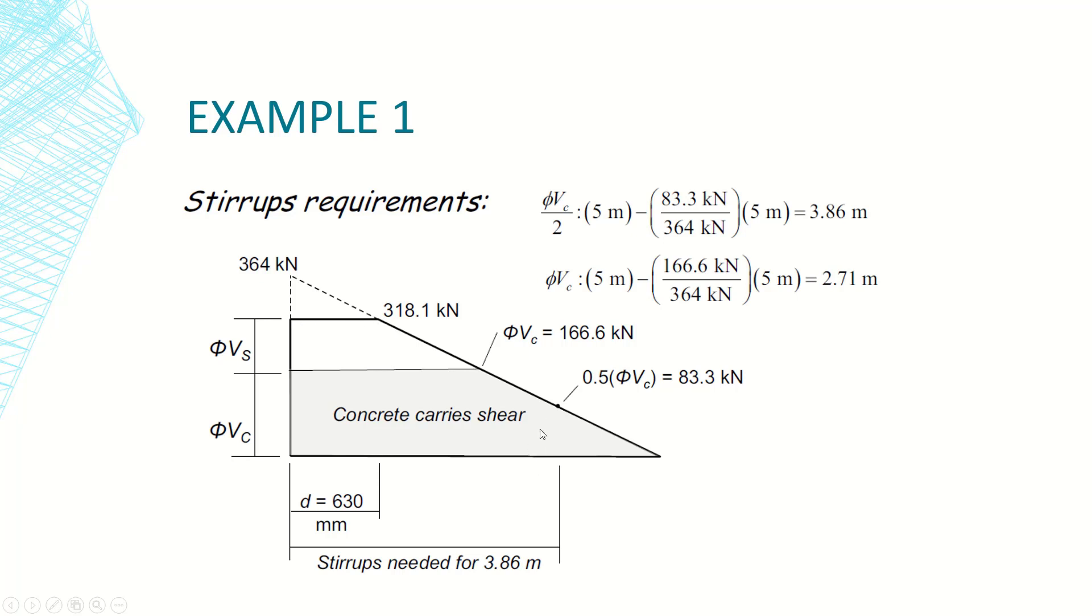We need to determine the position of this limit which is half concrete strength shear and the phi Vc which is for concrete. First of all we take this triangle versus the larger triangle and use the similarity of triangles to determine the station or the distance. So we determined the distance from here to this point as 3.86 and also similarly for the second station which is 2.71. In order to divide the beam into three zones to distribute the shear reinforcement at different spacings based on the critical value at each zone.